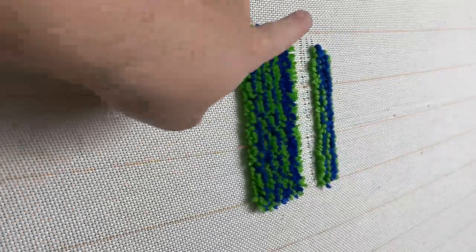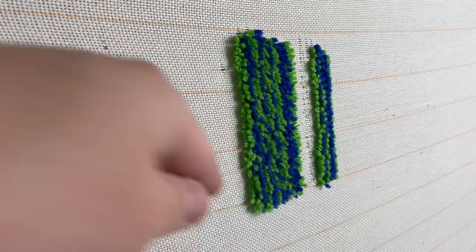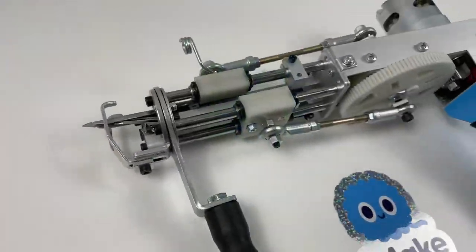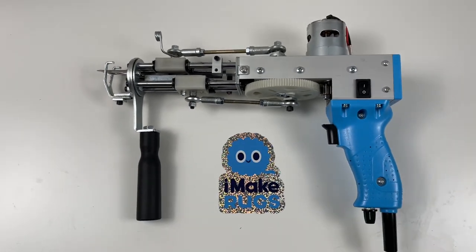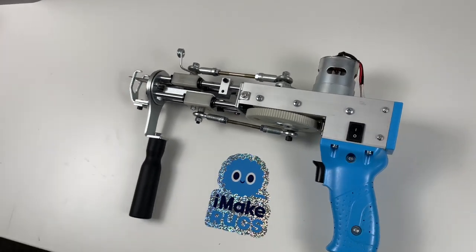As you can see, cut pile is nice and shaggy. Many rug guns on the market only do cut pile or they only do loop pile. But with our rug gun, you could change between the two in just minutes.